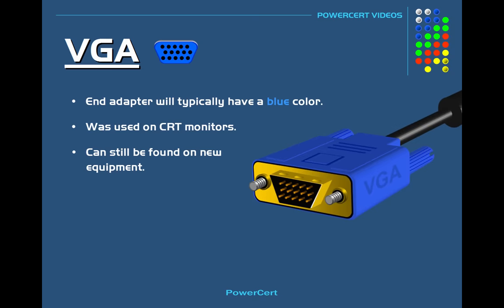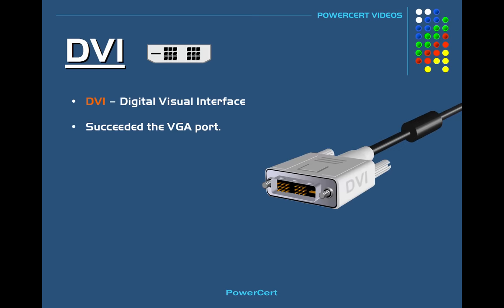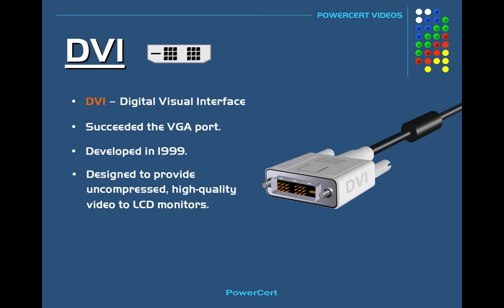The next video port is called DVI, which stands for Digital Visual Interface. The DVI port has succeeded the VGA port. It was developed in 1999 and it was designed to provide uncompressed high quality video to LCD monitors.